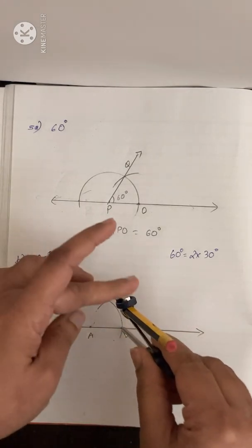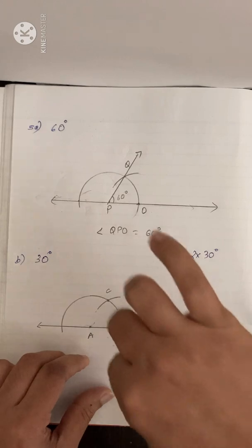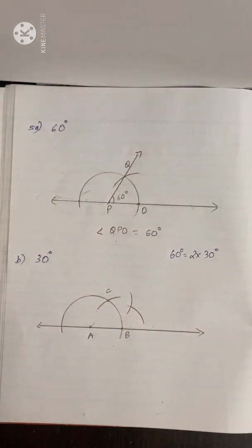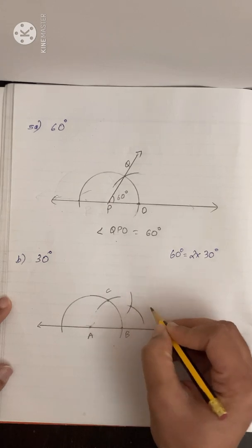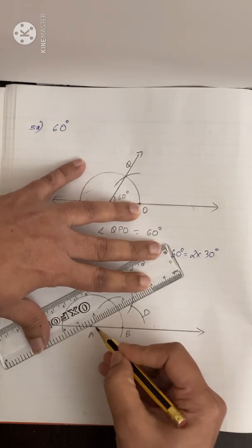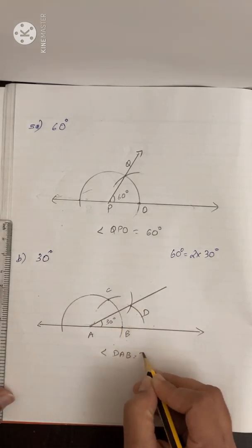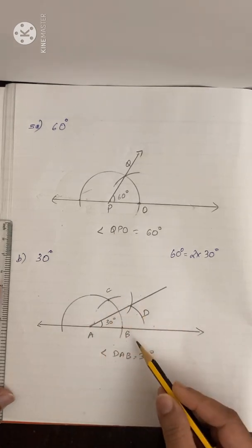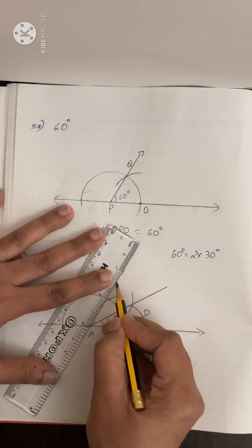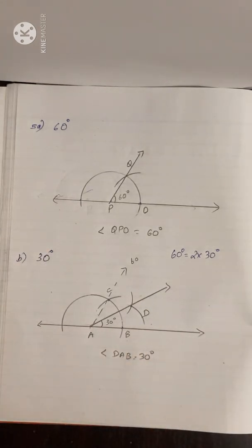With B as center, take a radius more than half of BC and draw an arc. With C as center, draw another arc. Let this intersection point be D. Join A and D. This gives us angle DAB equals 30 degrees. First construct 60 degrees, then construct the bisector of it to get 30 degrees.